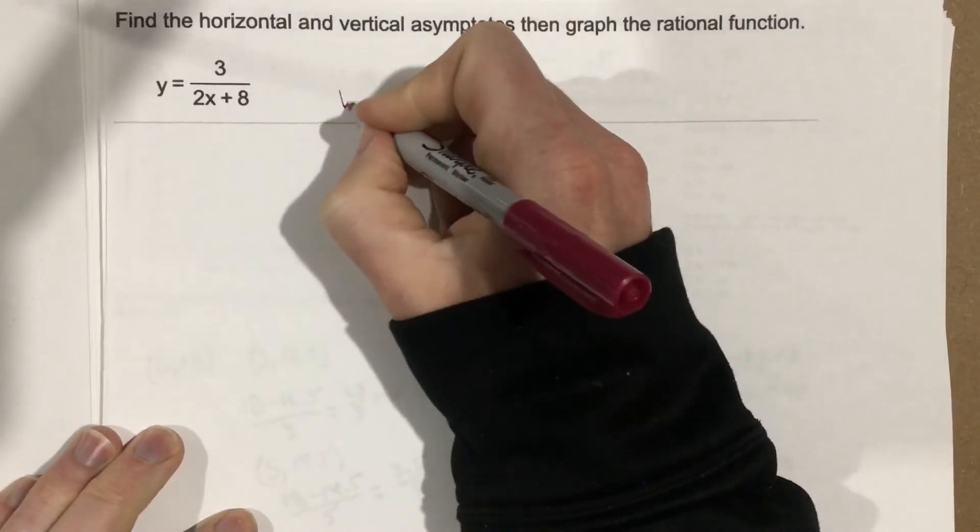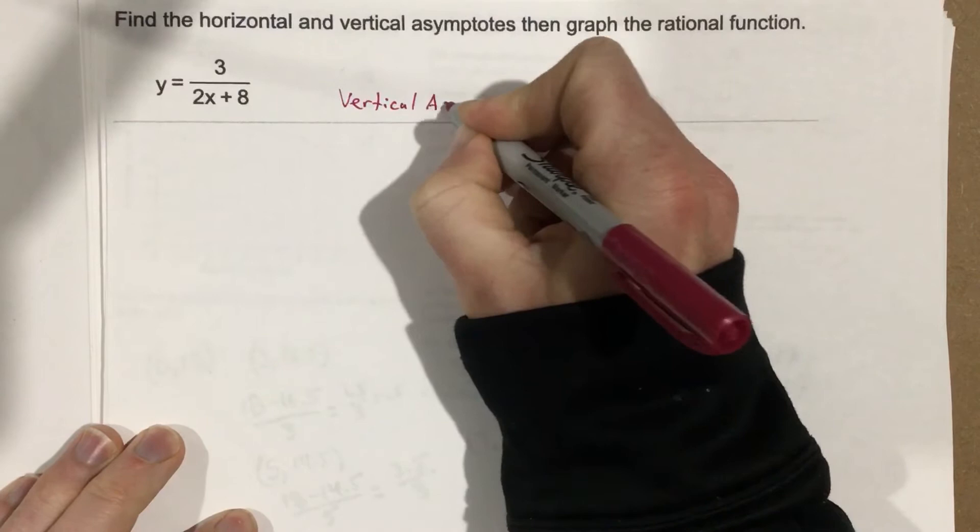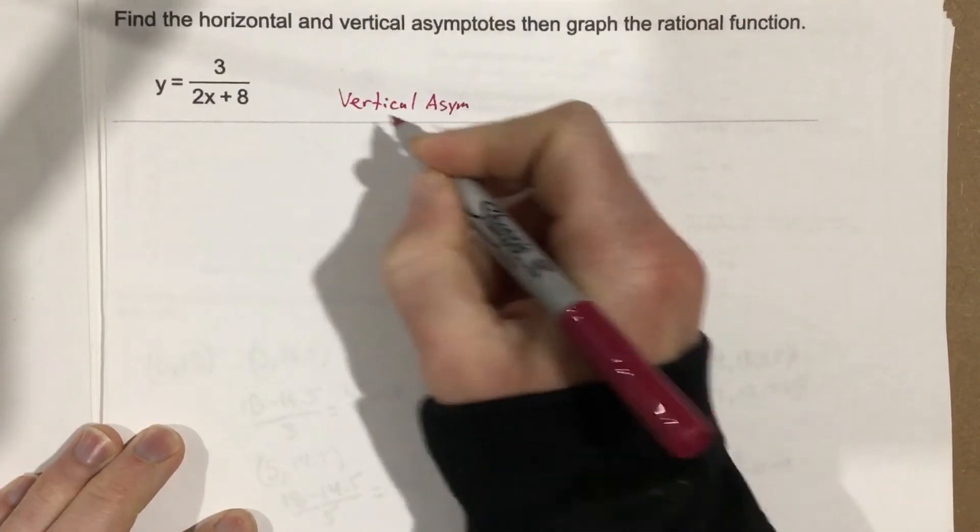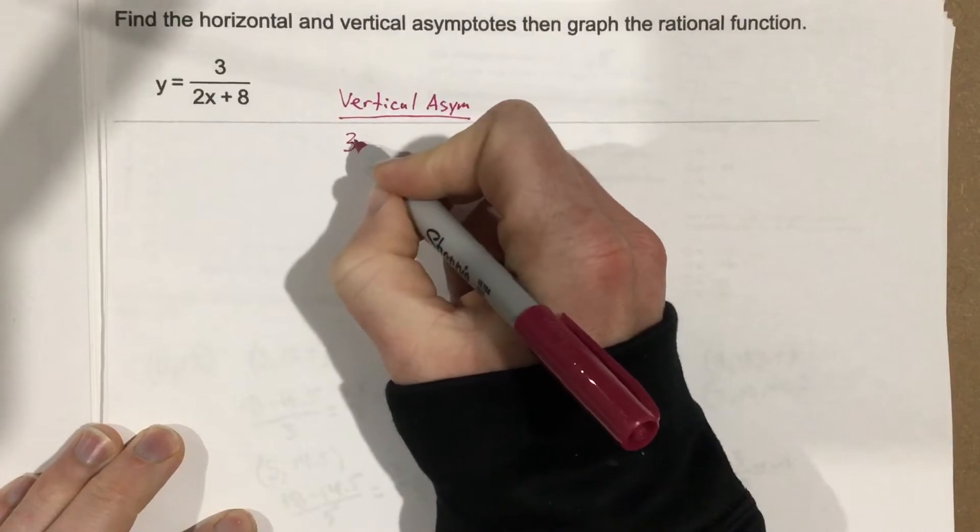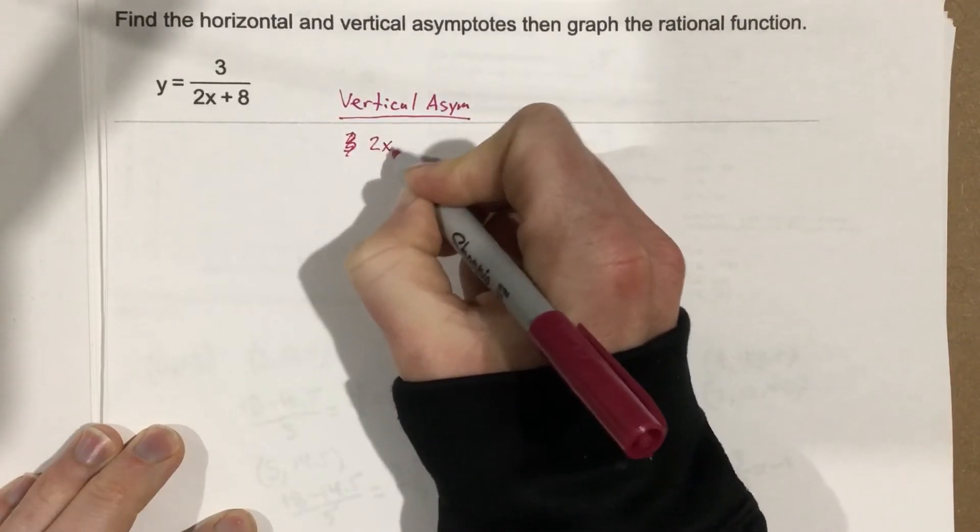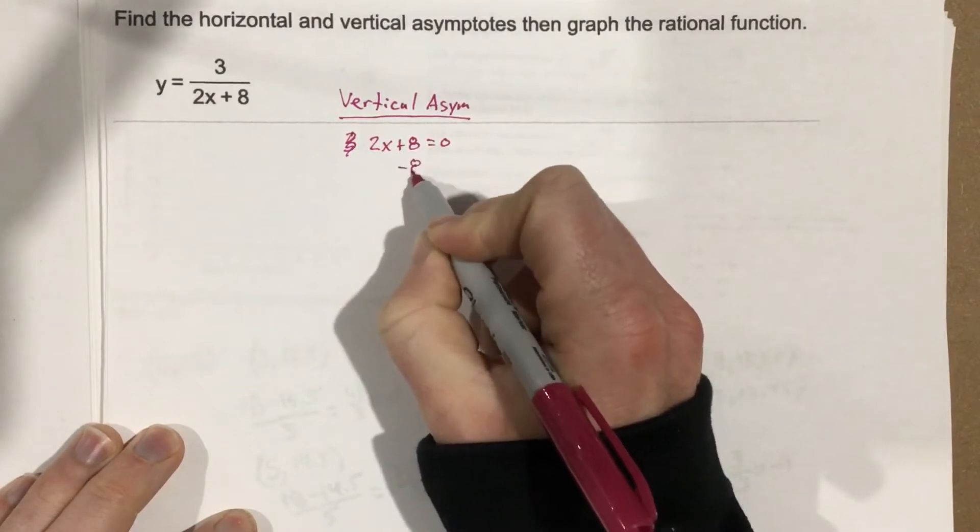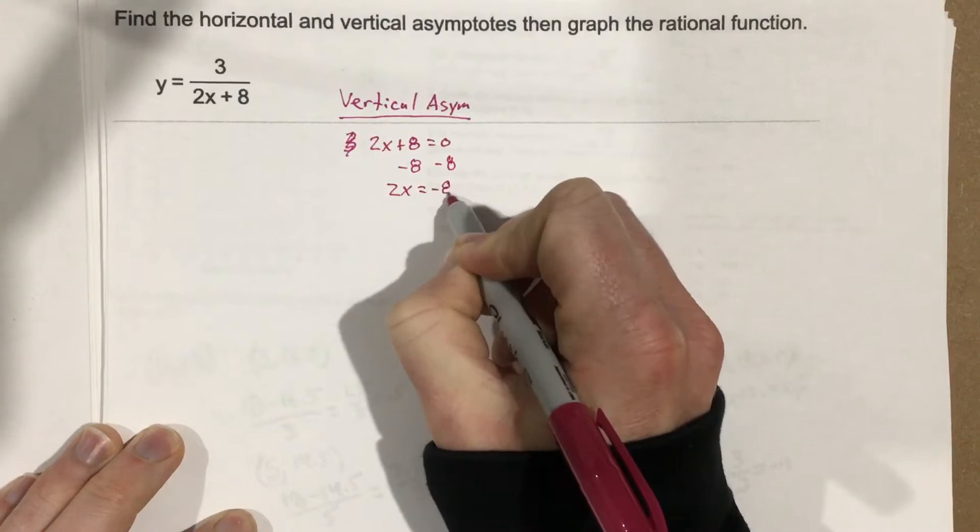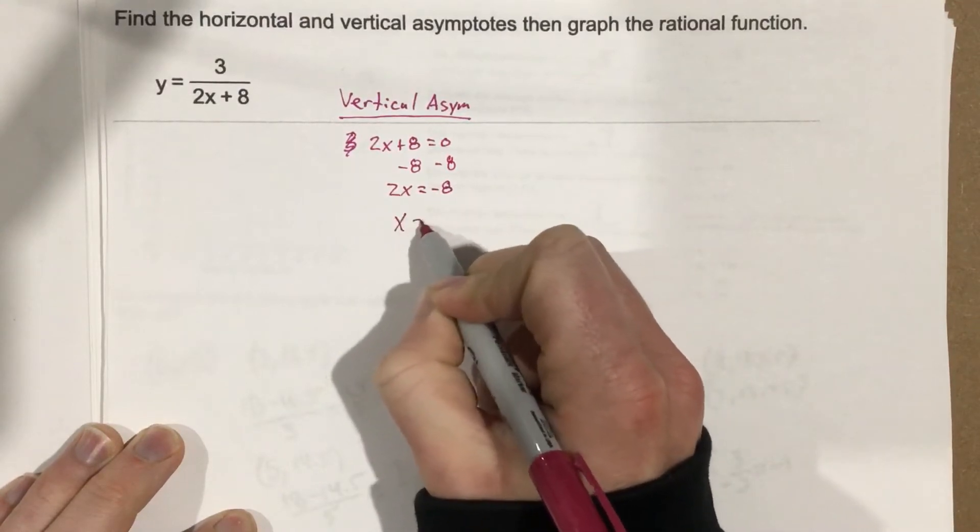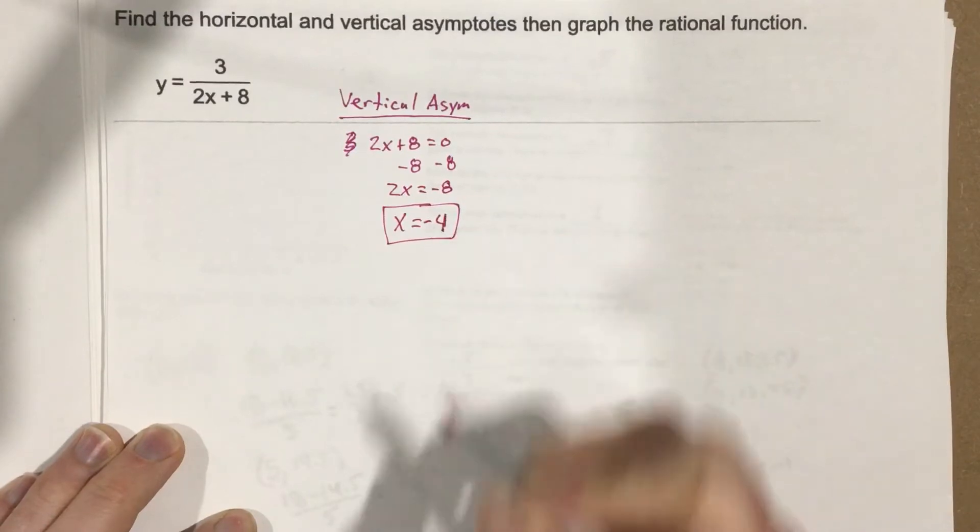We know we can find the vertical asymptote by setting the denominator equal to 0. So 2x plus 8 equals 0. Now subtract the 8, 2x equals negative 8, divide by 2, and x equals negative 4. So the vertical asymptote is x equals negative 4.